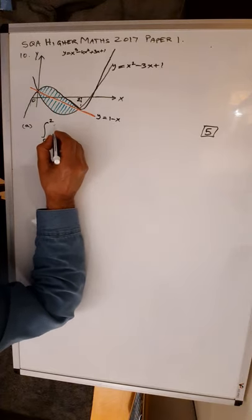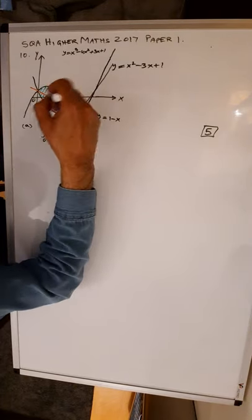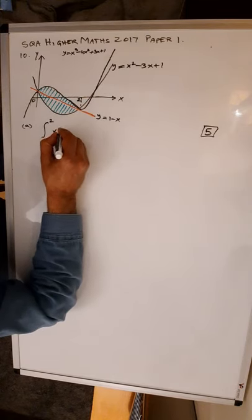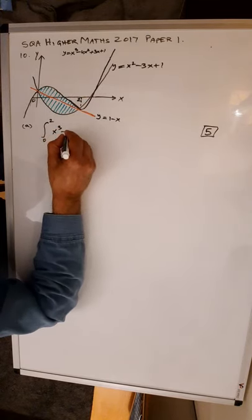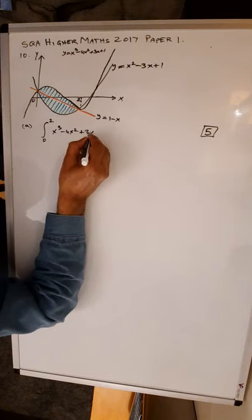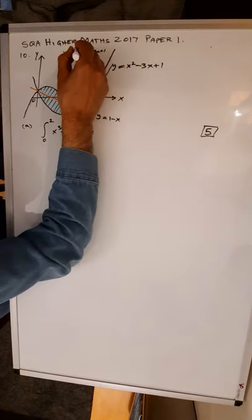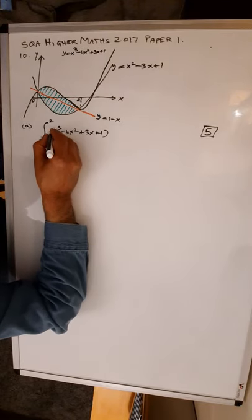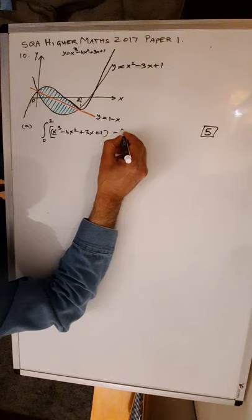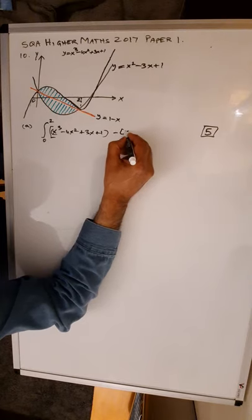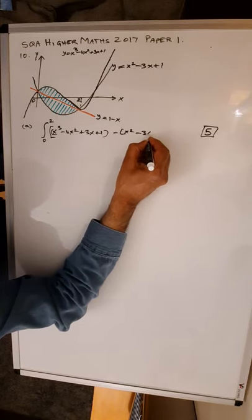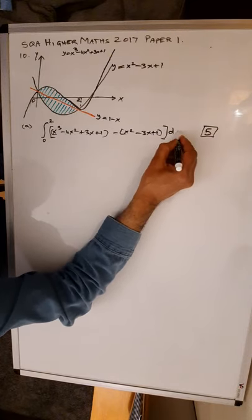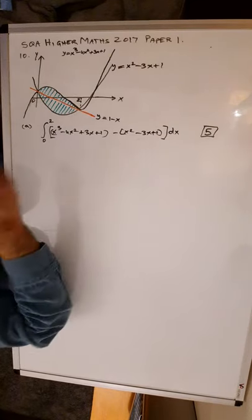From 0 to 2, the curve which is above is the cubic curve, so you put that equation first: x cubed minus 4x squared plus 3x plus 1, minus the quadratic x squared minus 3x plus 1, with respect to x. This is for 5 marks.